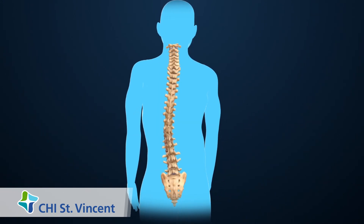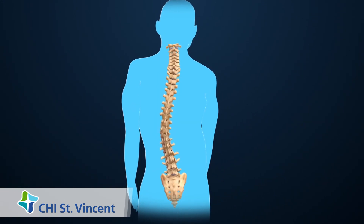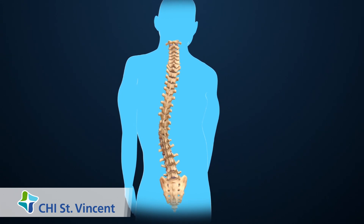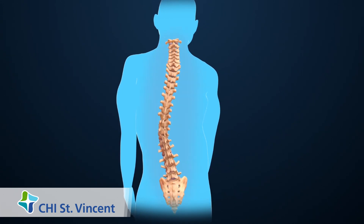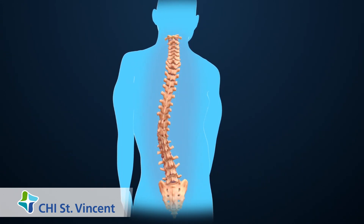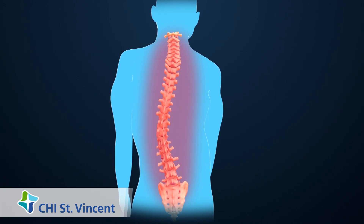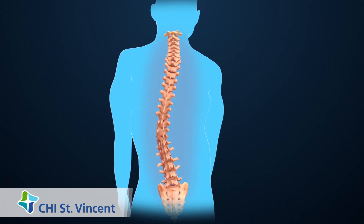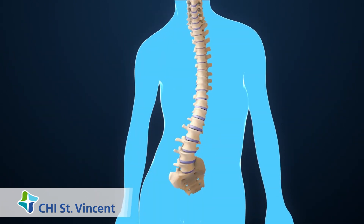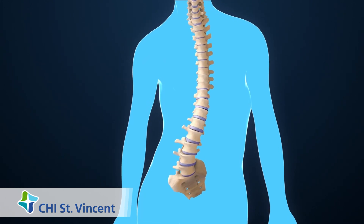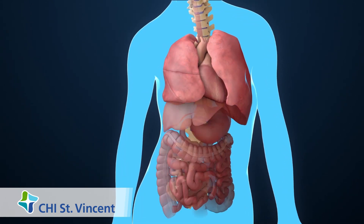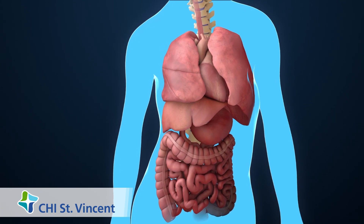During childhood, the spinal curve usually becomes worse during periods of rapid growth. If the curve becomes severe, it can cause problems with posture, walking, and back pain. It can also cause the internal organs to become cramped for space, causing heart, breathing, and digestion problems.